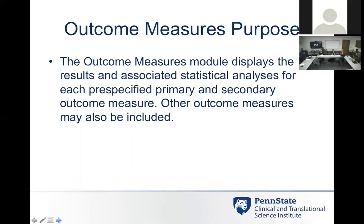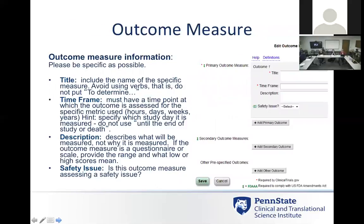The module displays results and statistical analysis for both predefined primary and secondary outcome measures. Other outcome measures can be included, but you definitely have to report on the primary and secondary as listed in the protocol. Some of this information is imported from your registration information, but you have to be very specific — a lot of the pushback from reviewers is that entries are too general and you need to be more specific in the terms used to define your measures.